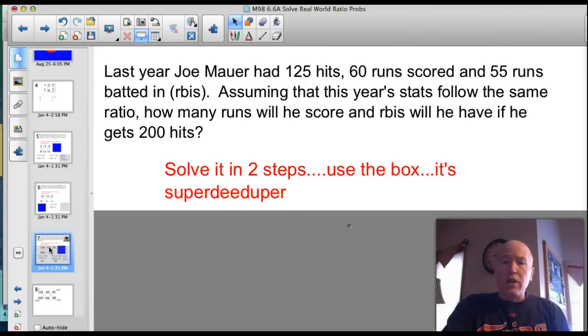Here's a more complicated one you'll need your calculator for. Last year, Joe Mauer had 125 hits, 60 runs scored, and 55 RBIs, or runs batted in. Assuming that this year's stats follow the same ratio, how many runs will he score and RBIs will he have if he gets 200 hits? Go ahead and see if you can solve the problem.